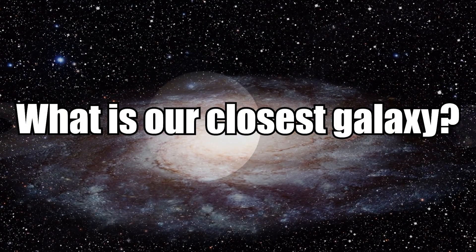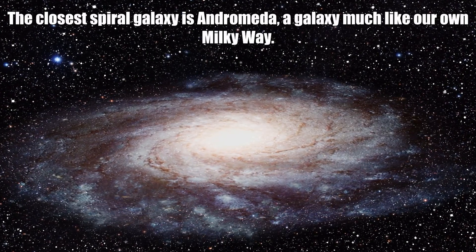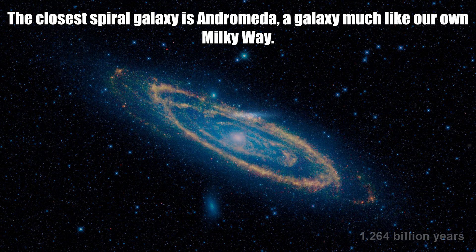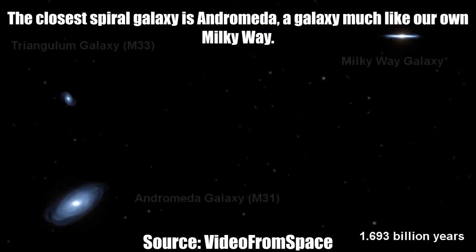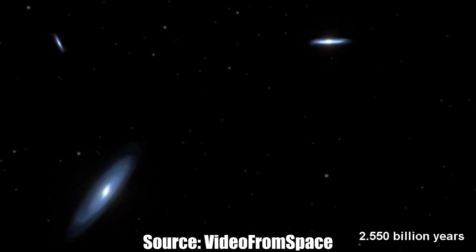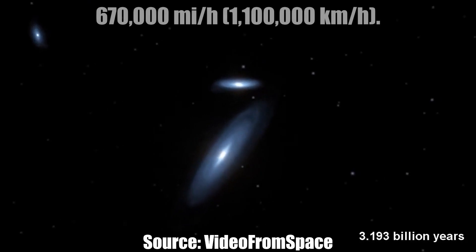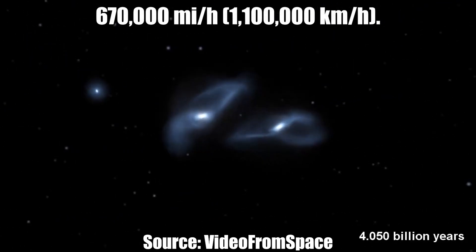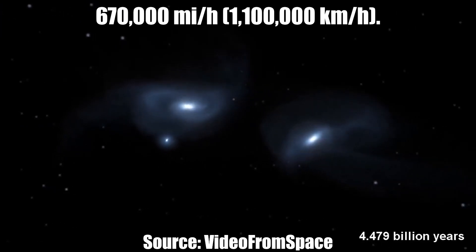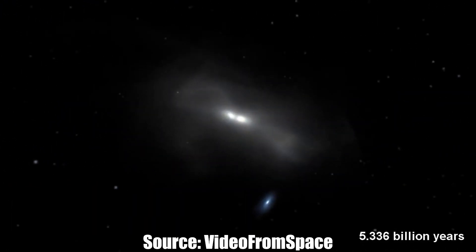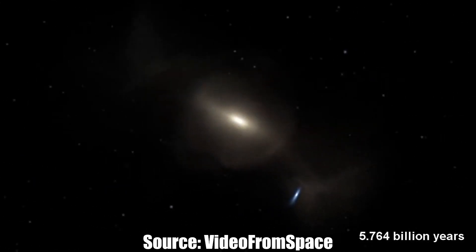Next question, what is our closest galaxy? The closest spiral galaxy is Andromeda, a galaxy much like our own Milky Way galaxy. It is 2.2 million light years away from us. Andromeda is approaching our galaxy at a rate of 670,000 miles per hour or 1.1 billion kilometers per hour. And scientists predict that it will collide with our Milky Way galaxy about 5 billion years from now.